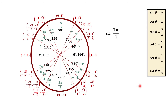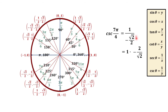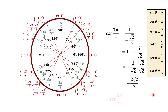For cosecant 7 pi over 4, cosecant is 1 over y. 7 pi over 4 is at 315 degrees, and the y-coordinate is negative square root of 2 over 2. So we have 1 over negative square root of 2 over 2. Copying the numerator and multiplying by the reciprocal gives negative 2 over square root of 2. To rationalize, we multiply by square root of 2 over square root of 2, giving negative 2 square root of 2 over 2. Cancelling 2, cosecant 7 pi over 4 is equal to negative square root of 2.